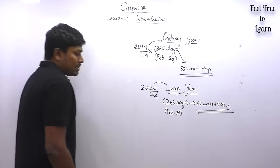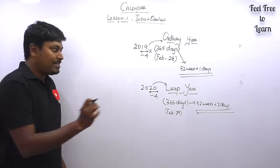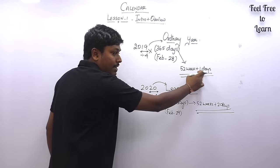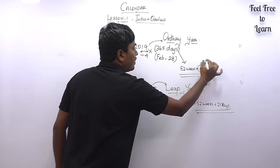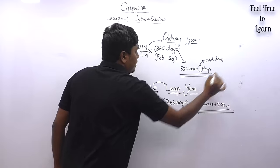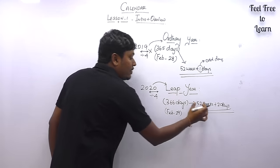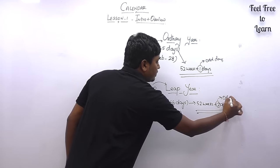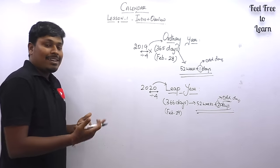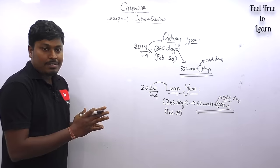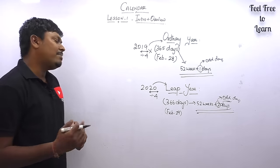A day which is more than a complete week is called an odd day. So in an ordinary year we have 52 weeks and 1 odd day. In a leap year we have 52 weeks plus 2 odd days. An odd day means the extra days beyond a complete week.